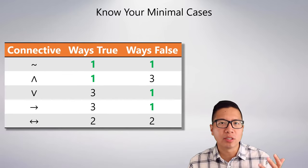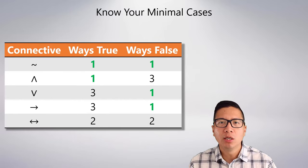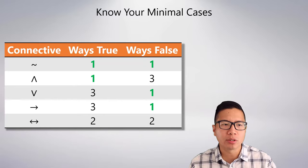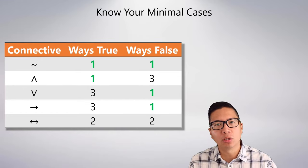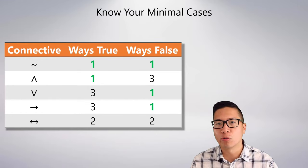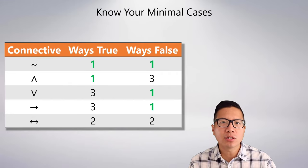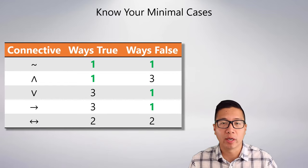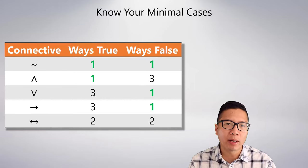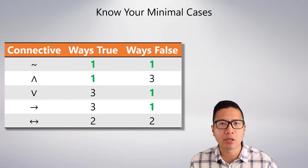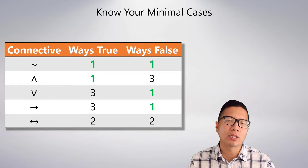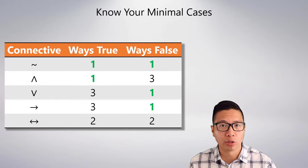A quick summary: know your minimal cases for truth tables. Negation just flips the truth value. For 'and,' 'or,' and the conditional, each has a unique case that makes it either true or false — you just have to pause and think about it. You don't need to memorize all the truth tables because you already know what 'and,' 'or,' and 'if-then' mean from natural language. Recognizing the minimal cases makes your life easier when doing truth tables.